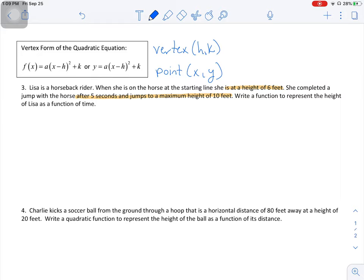When we're looking at this, we know we're going to be dealing with time as the independent variable. And then height is going to be the dependent variable. So that's my x, y axis. When she's at the starting line, Lisa is a height of 6 feet. She's going to make a jump. At 5 seconds, she jumps to a maximum height here of 10 feet. So this is seconds and height is in feet.